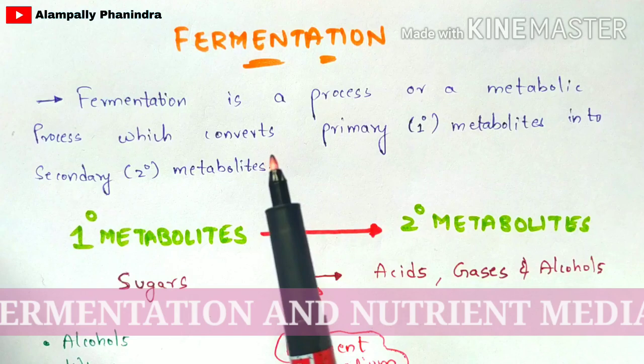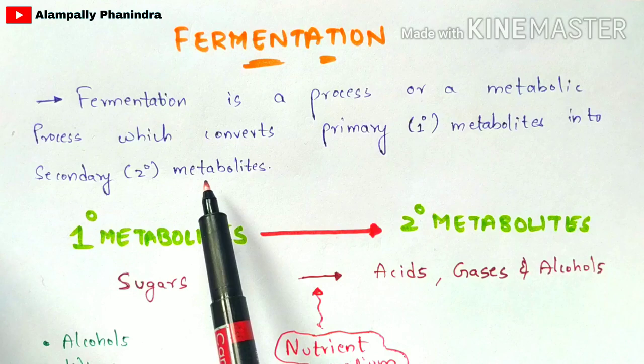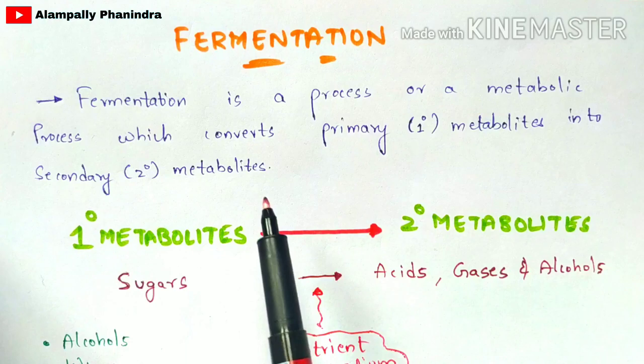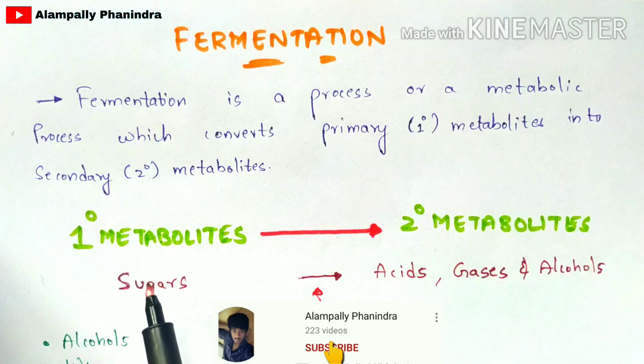In this video, let us discuss about the fermentation process in detail, including the nutrient medium and how fermentation is done. Fermentation is a metabolic process which converts primary metabolites into secondary metabolites. The main aim of fermentation is the conversion of primary metabolites into secondary metabolites.